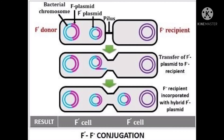So when a copy is transferred into the F- cell, the F- cell is converted into an F' cell. Now the newly formed F' cell has some selective advantage because it carries an F' plasmid, and in that F' plasmid it contains some special genes from the donor bacterial main DNA. Those genes are normally functional and they will give some selective advantage for the newly formed F' cell.